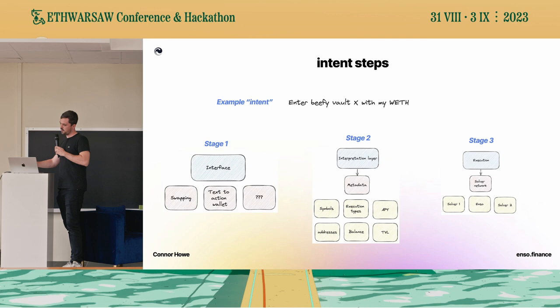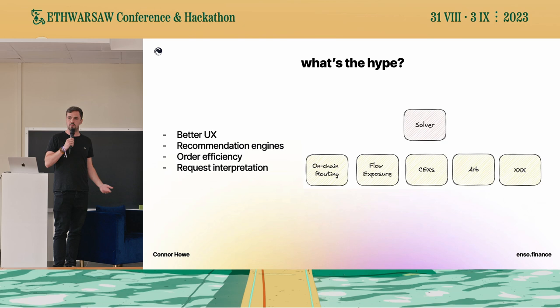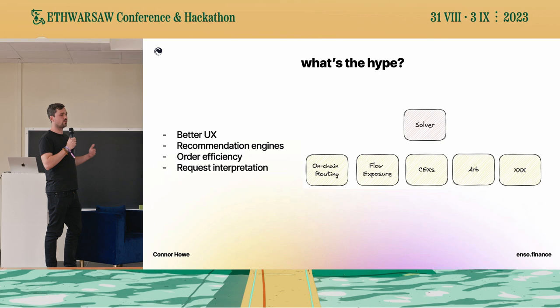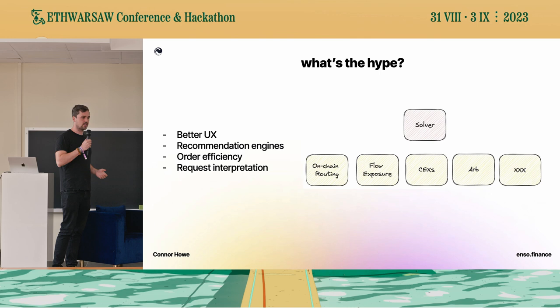What's the hype? One, it's better UX. Two, you'll have recommendation engines to make the user experience a lot simpler — instead of going to all these different interfaces, you can just search 'I want to find the best APY for X and Y' and recommendation engines will provide this. Three is order efficiency. You'll see all these different methods that solvers can use. Many solvers now bring their own flow and hedge their positions rather than just on-chain routing, which ensures they capture more order flow without paying the gas cost for on-chain routing itself.